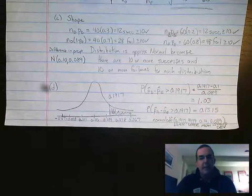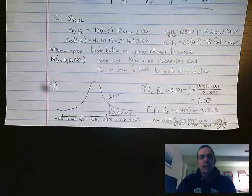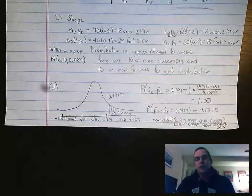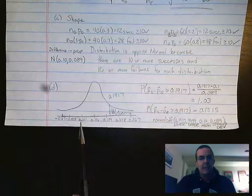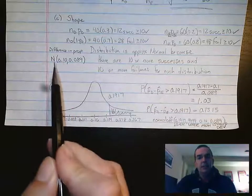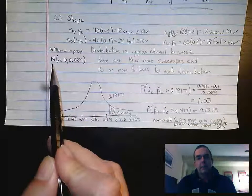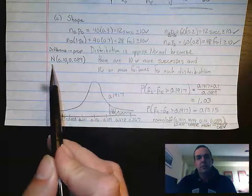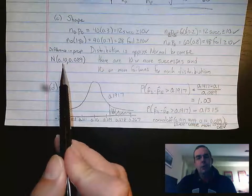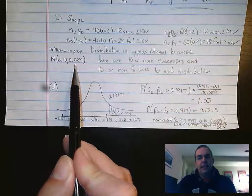Part D is always that part with sampling distribution where they make us draw the curve and answer a question about probability. So I took this distribution we figured out - a normal distribution with a mean of 0.10 and a standard deviation of 0.089.